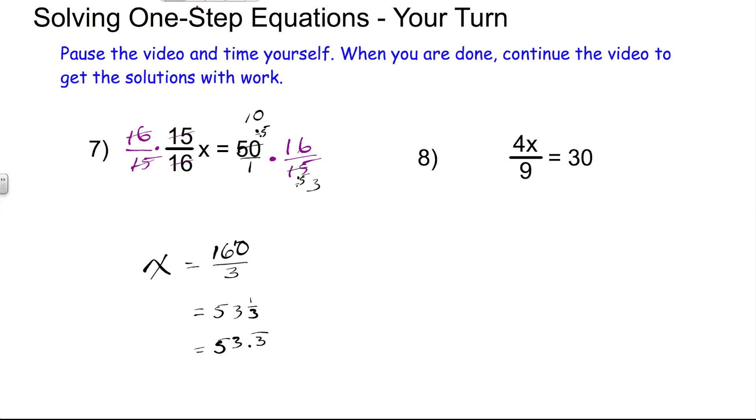In problem number 8, we have 4 times x divided by 9 is equal to 30. What we're going to do is multiply, in this case, each side by 9. This is using the two-step method. On the left-hand side, the 9's cancel out, leaving us with 4x on the left of the equal sign, and on the right of the equal sign, we have 30 times 9, which is 270.